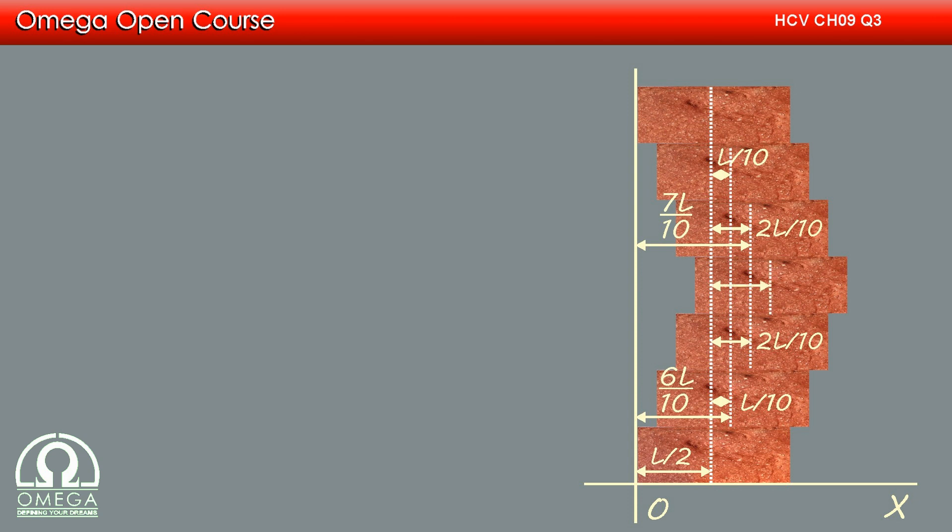Finally, the brick in the middle is displaced by 3L by 10 from the lowest brick. Hence, its center of mass is at a distance of 8L by 10 from the y-axis.